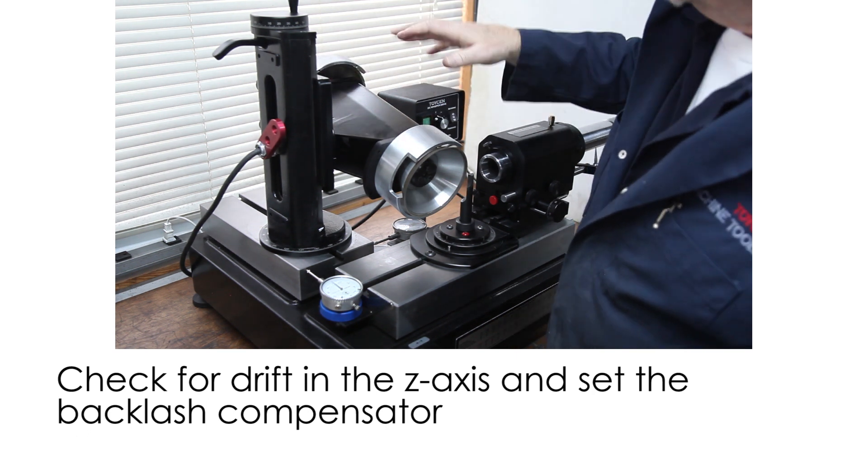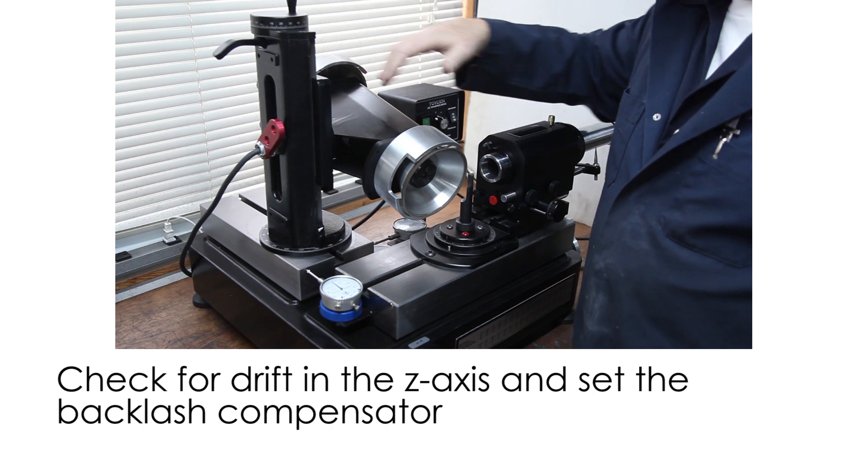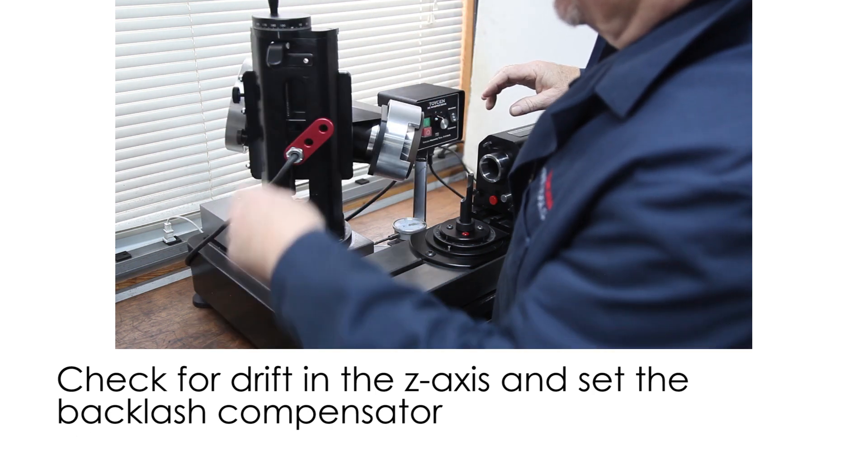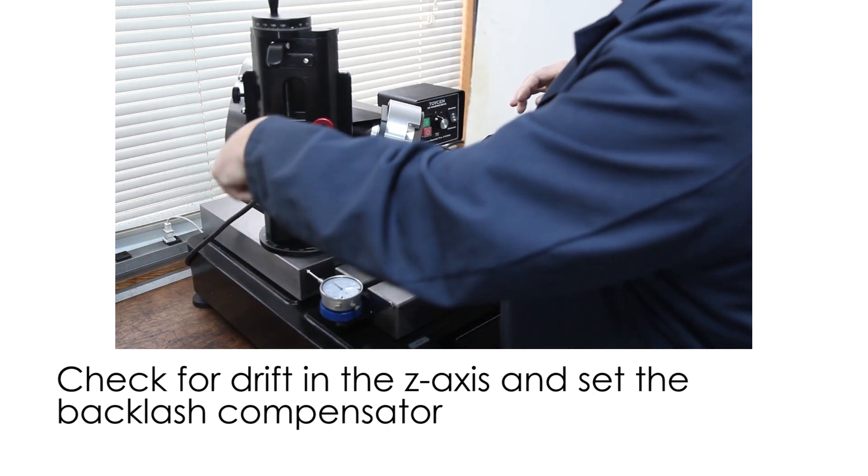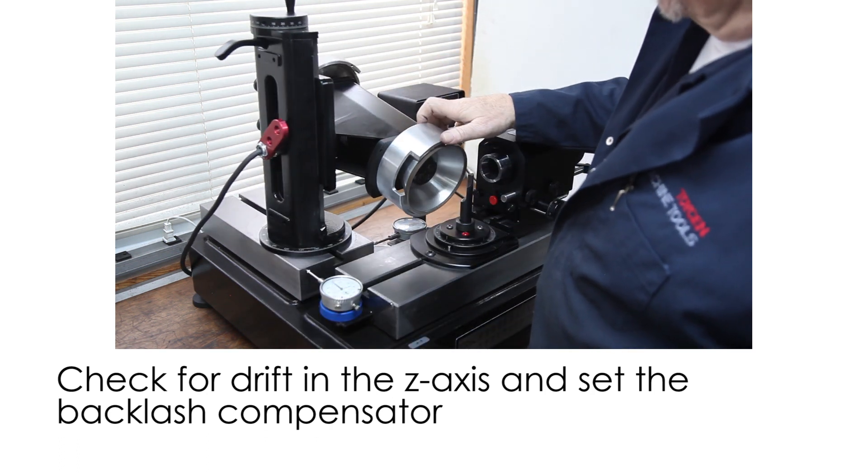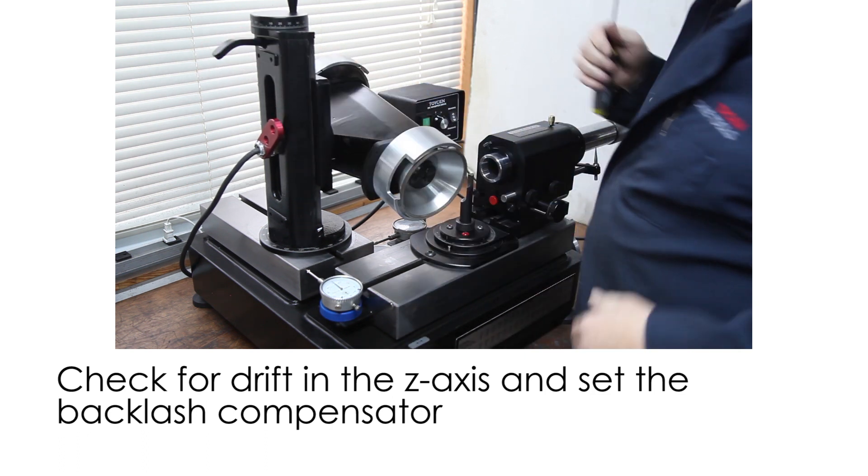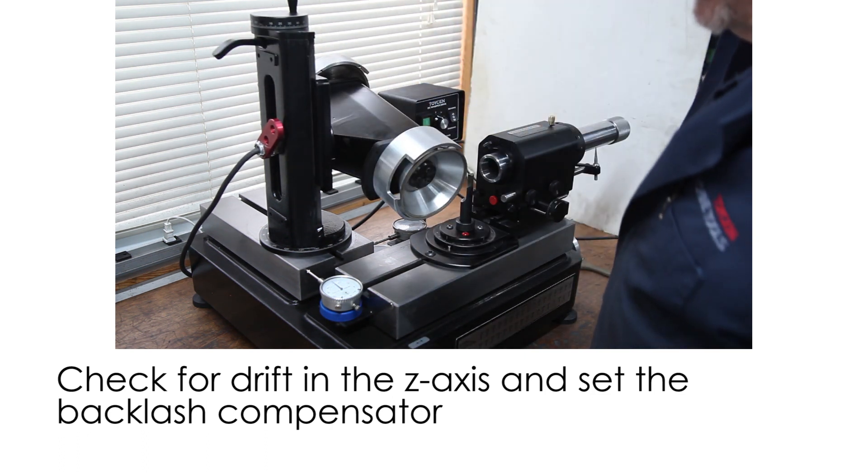Lead screw backlash compensator. So when you're using your elevator, if you find there's any drift in this dial, you can just tighten this backlash compensator right there and that takes slop out of your lead screw so that when you raise and lower, the dial there's no dial drift when you go up or down.